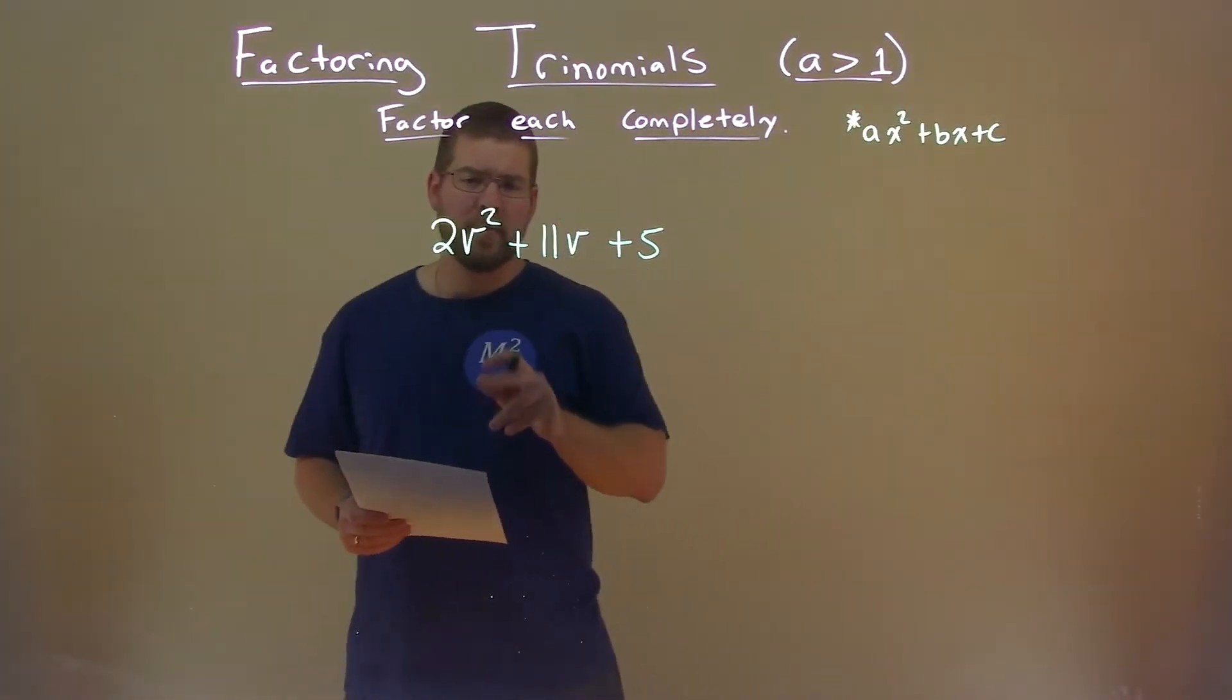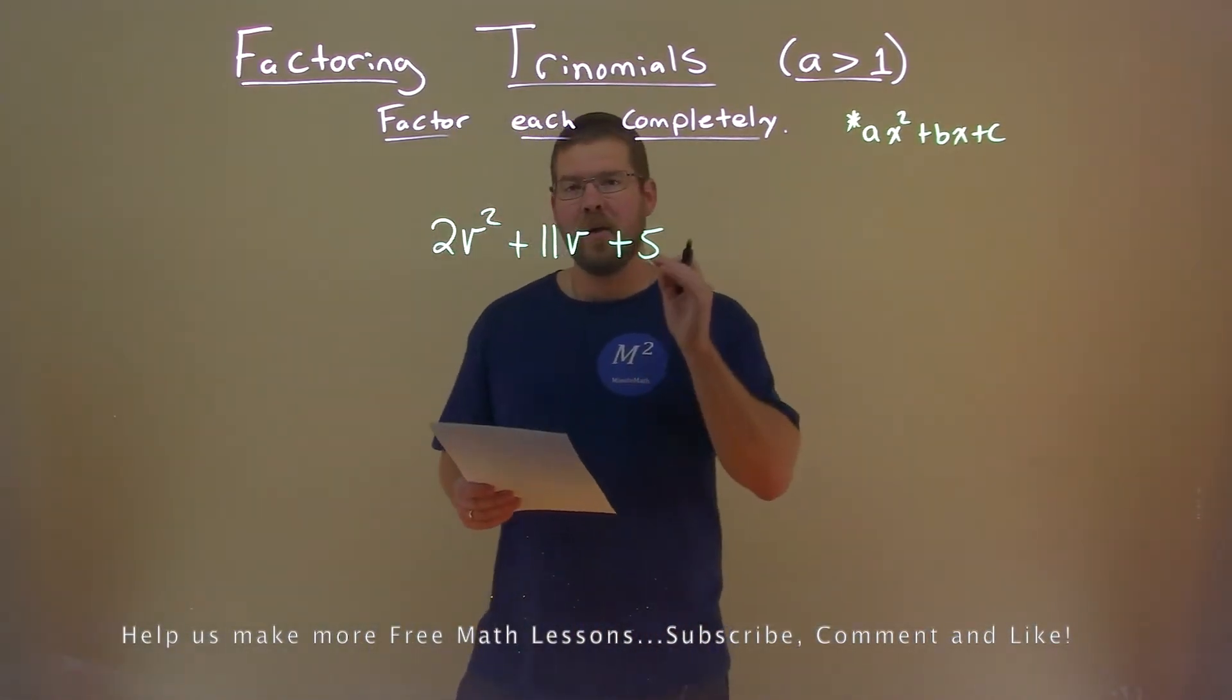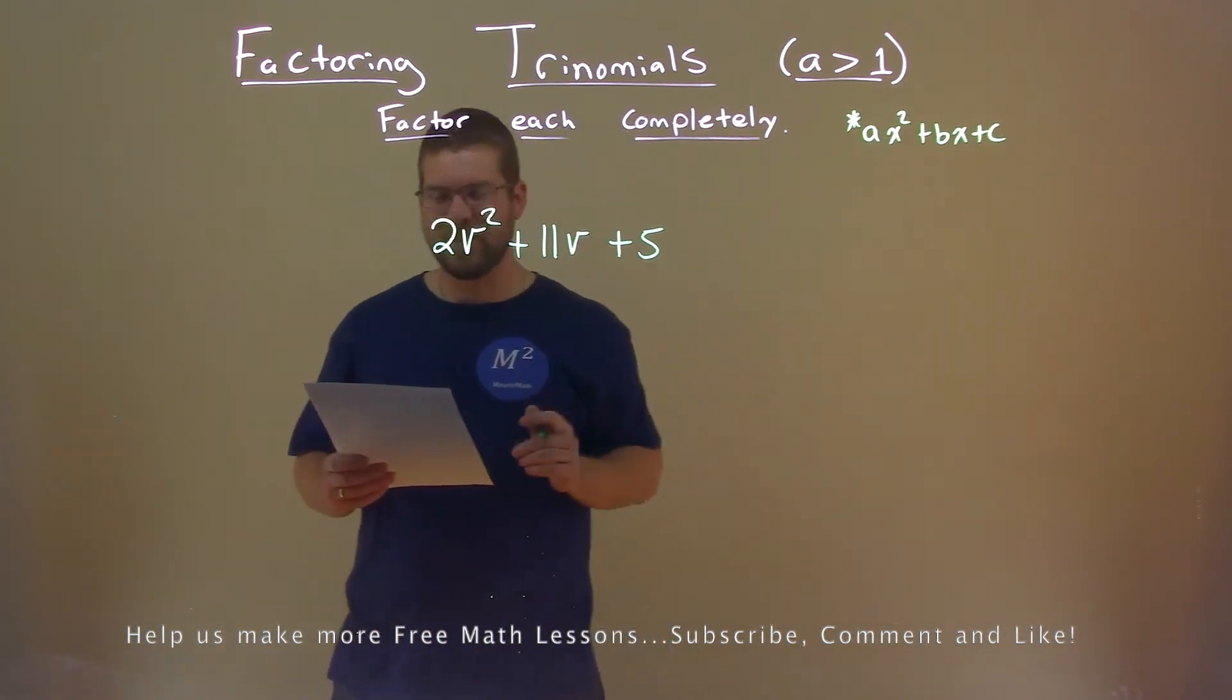We're given this problem right here: 2v squared plus 11v plus 5. We have to find factors completely. That's what we're looking for.